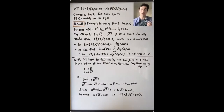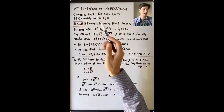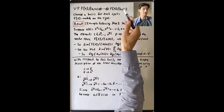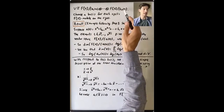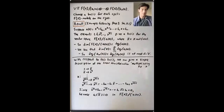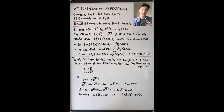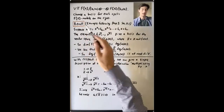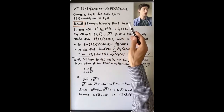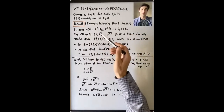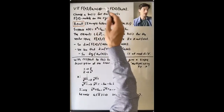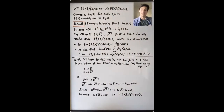Now I want to talk a little bit about bases. If we choose a basis for each cyclic module on the right-hand side, we'll get a basis for V, and then once we choose a basis for V, we'll get a matrix for the linear transformation T with respect to this chosen basis. This is an example following Proposition 1 in Section 11.1. What's a reasonable choice of basis for each one of these cyclic F[x]-modules?